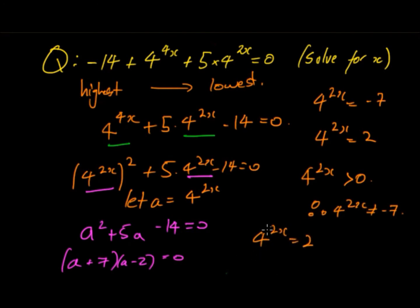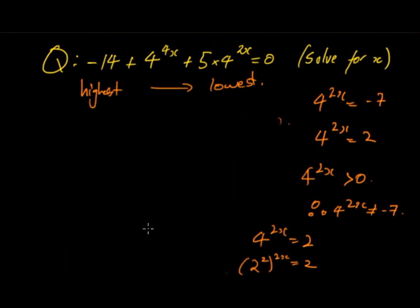We can write 4^(2x) in terms of base 2. So (2^2)^(2x) = 2. Going from here we get 2^(2·2x) = 2^(4x) = 2^1. As these have the same base we can equate the exponents: 4x = 1. Therefore x = 1/4.